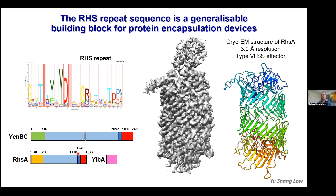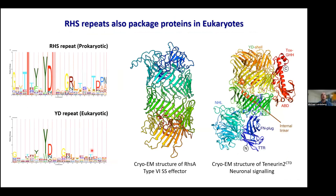RhsA encapsulates a cytotoxin at its C-terminus — in this case an RNase — partnered with a cognate immunity protein known as UBE. Recent work from other groups has shown that these RHS proteins are type 6 secretion system-associated effectors, with a conserved N-terminal sequence interacting with the needle tip of a type 6 secretion system. They have cognate immunity proteins characteristic of T6SS effectors. We can conclude that RHS repeat sequences may be generalizable building blocks for this cage-like structure that encapsulates potentially toxic proteins.